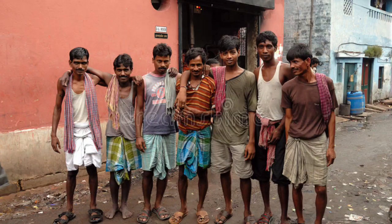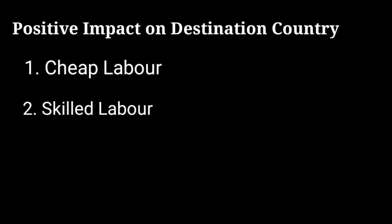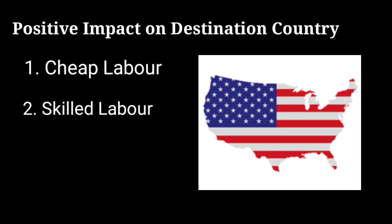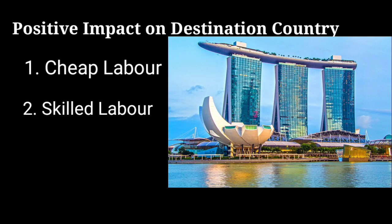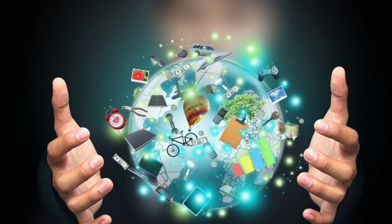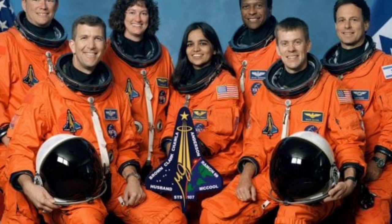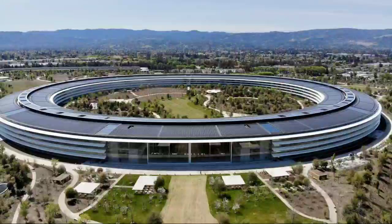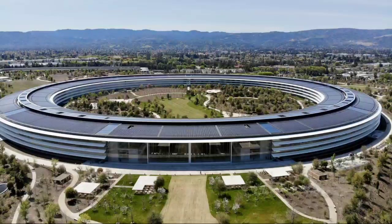Secondly, the destination country benefits from skilled labor. Some immigrants are highly skilled and talented and they contribute to knowledge and production, improving the well-being of everyone in that country. For example, Indians who have migrated to countries like the USA, Canada, UK, Dubai, and Singapore have contributed immensely, especially in the field of science and technology. Many Indian scientists work at NASA, and Silicon Valley in the USA is dominated by Asians, especially Indians.